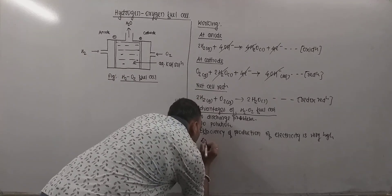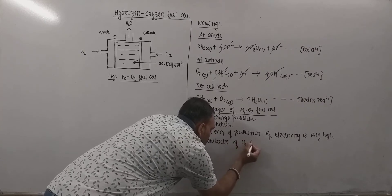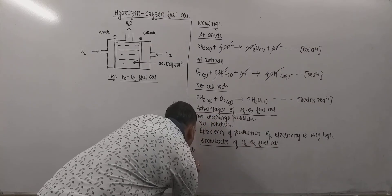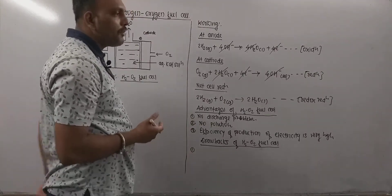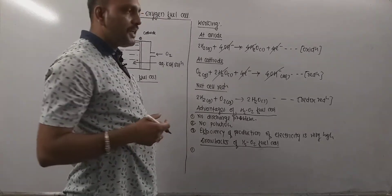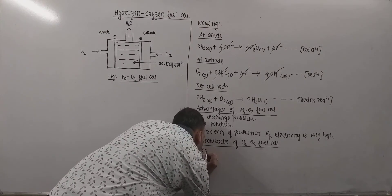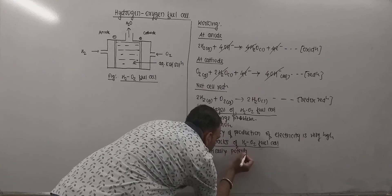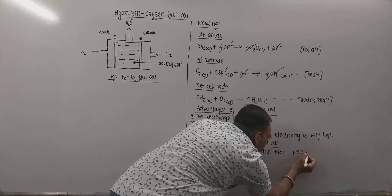Now besides this, few drawbacks are there. So what are the drawbacks of H2O2 fuel cell? Now very first thing is practically its potential is less than 1.23. Actually, calculated potential comes 1.23 for this cell. But practically that potential is less than 1.23 volts. So it is very important to note that practically potential is less than calculated, that is 1.23 volt.